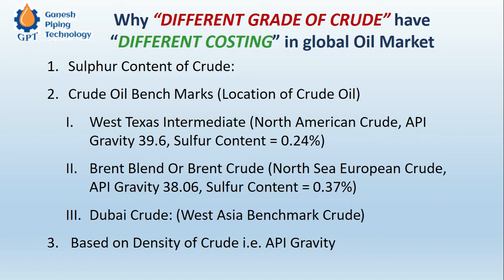The density is expressed as a number called the API gravity number. It is essentially a comparison of the density of that particular crude with water, but this value is inversely proportional — meaning a lower number indicates higher density and vice versa. If a crude has lower density, it is called light crude, and higher density crude is called heavy crude.